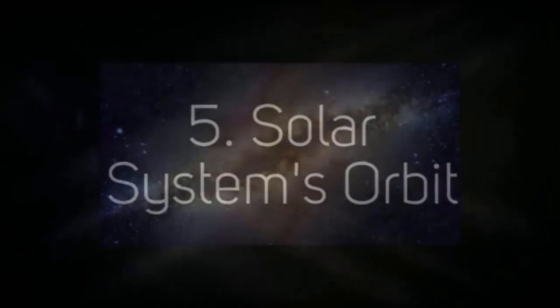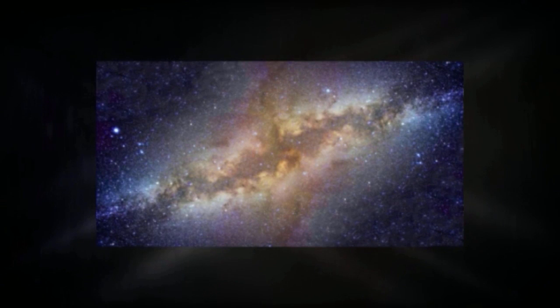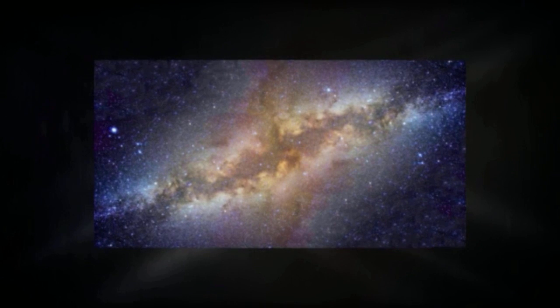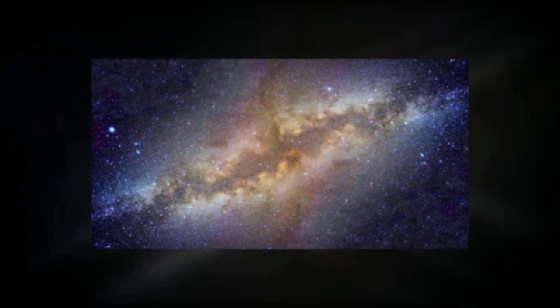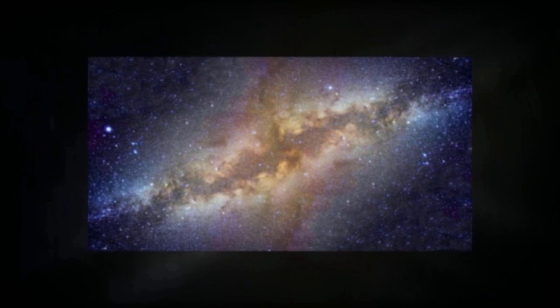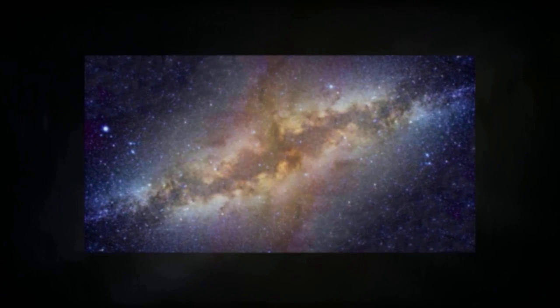It takes approximately 225 million years for our solar system to make one trip around the Milky Way. Our solar system has made this trip approximately 20.4 times since it formed about 4.6 billion Earth years ago.